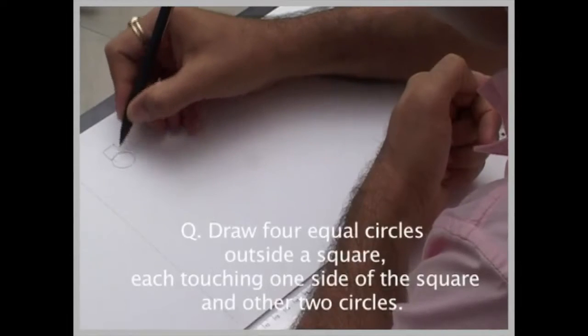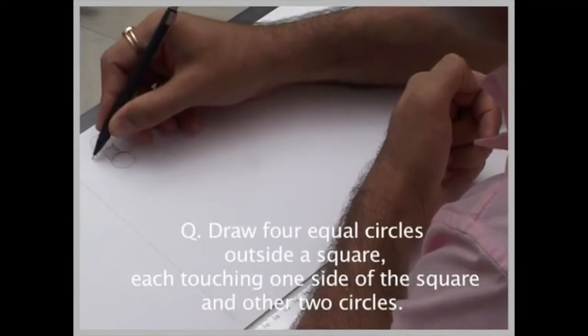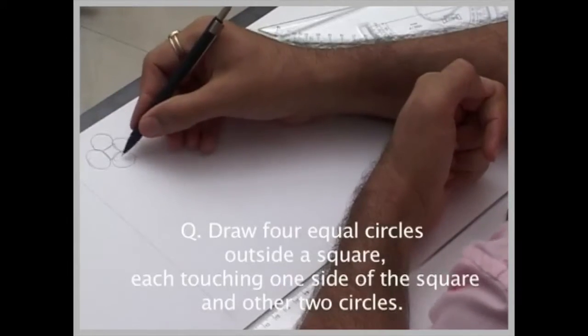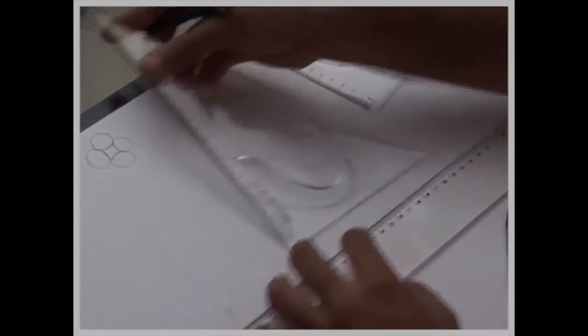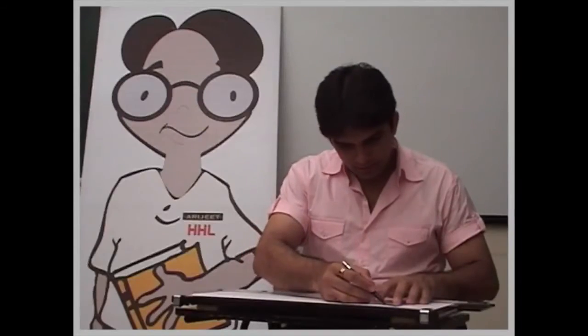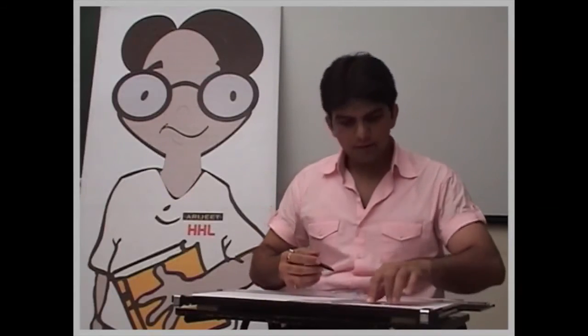We will draw a square and we will draw four circles touching one side of the square and other two circles. So first we will take a square, draw a square, same method. The only thing is, now in this case we have to extend the diagonal.